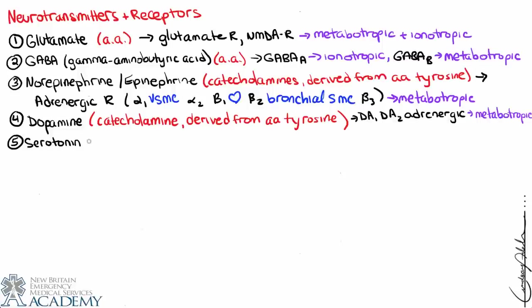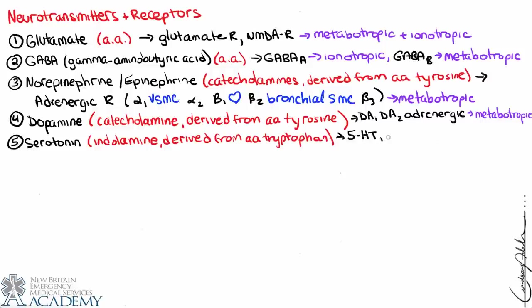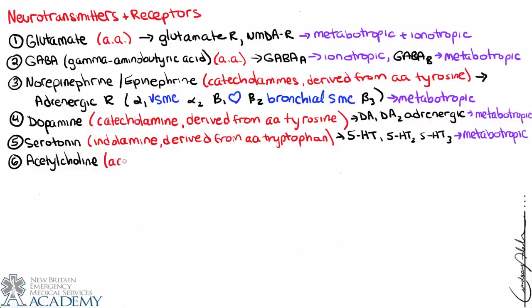Next we have serotonin, which we associate most often with mood, but it's a major neurotransmitter in the brain. Rather than being a catecholamine, it's an indolamine — a bit different — and it's derived from the amino acid tryptophan instead of tyrosine. Serotonin binds to 5-HT receptors: 5-HT1, 5-HT2, 5-HT3, and so on. Its mechanism is metabotropic.